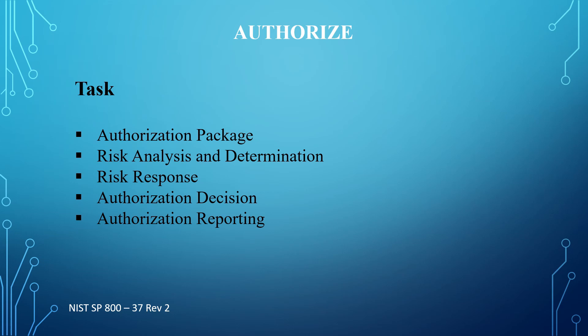The next task is the authorization decision. The authorizing official determines if the risk from the operation or use of the information system or the provision or use of common controls is acceptable. The next task is authorization reporting. The authorizing official reports the authorization decision and any deficiencies in controls that represent significant security or privacy risk.